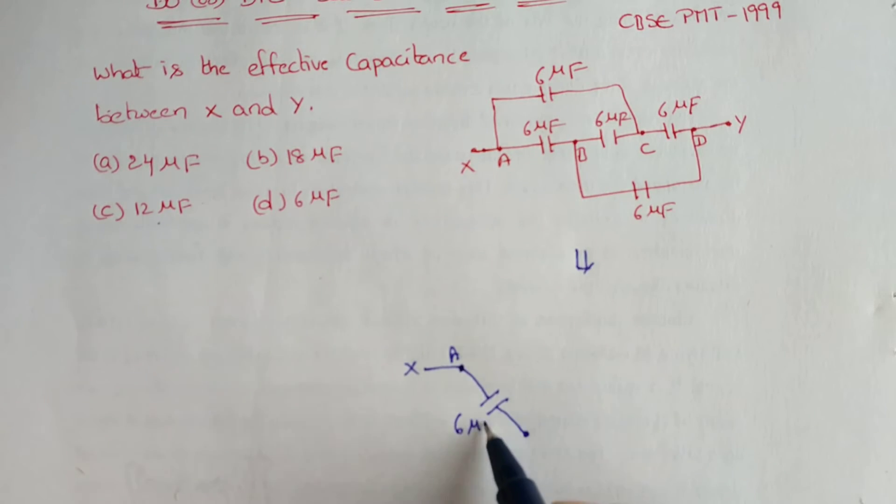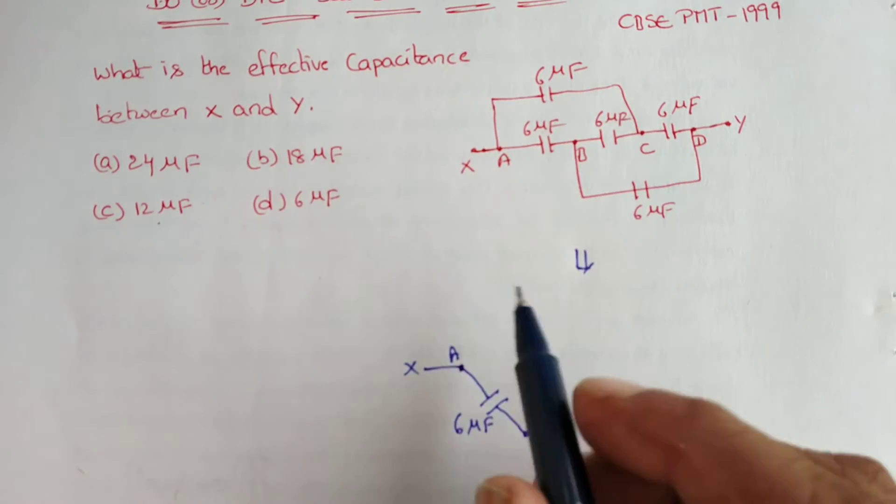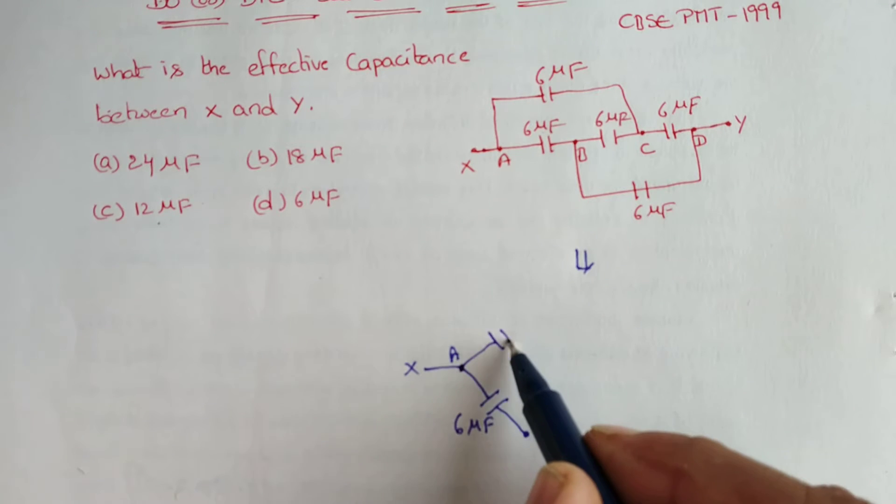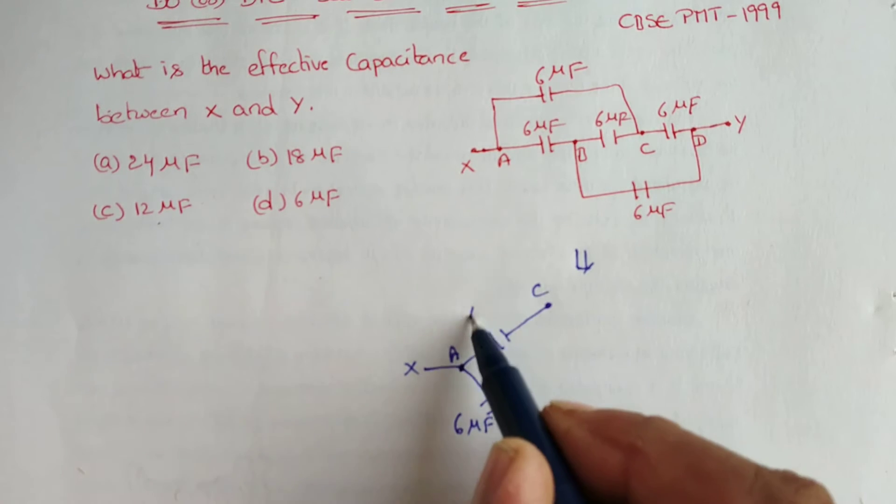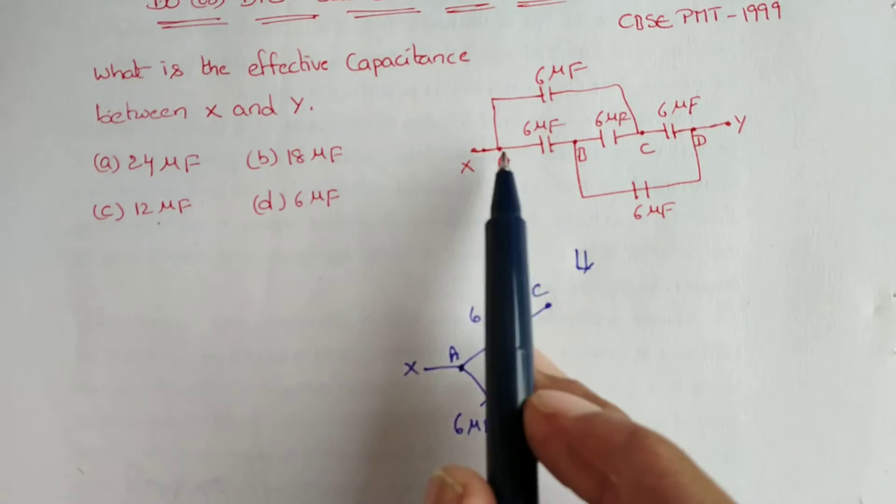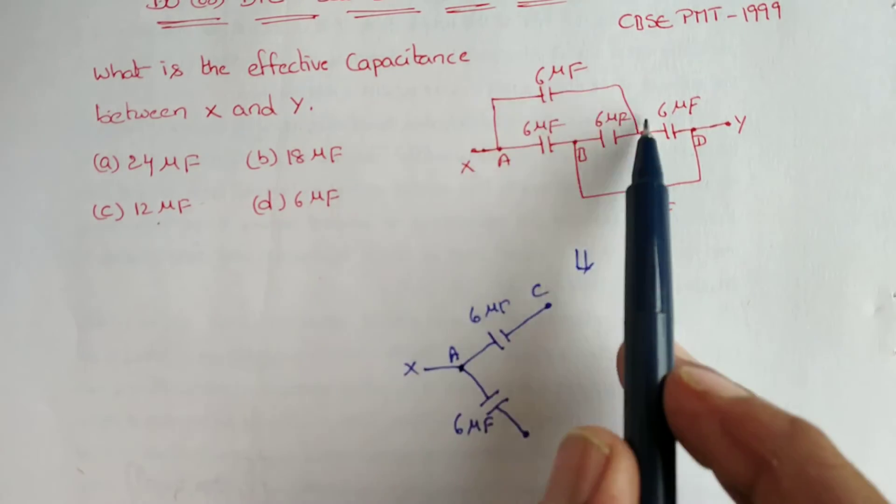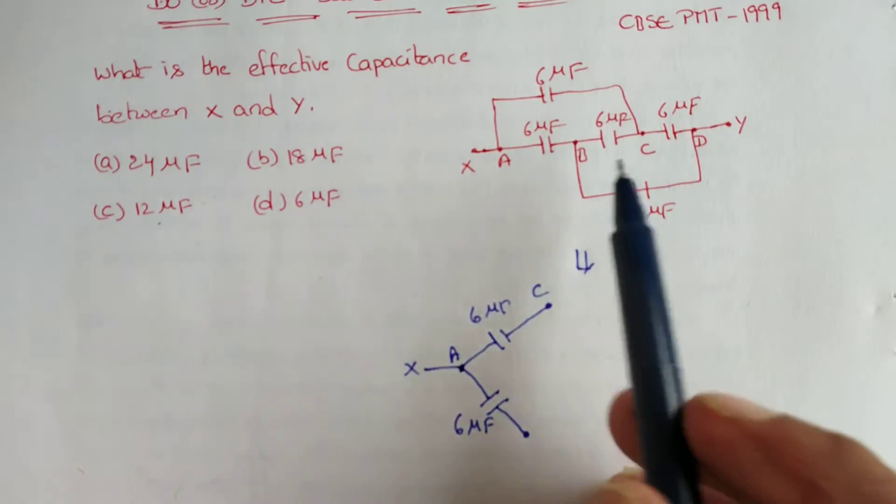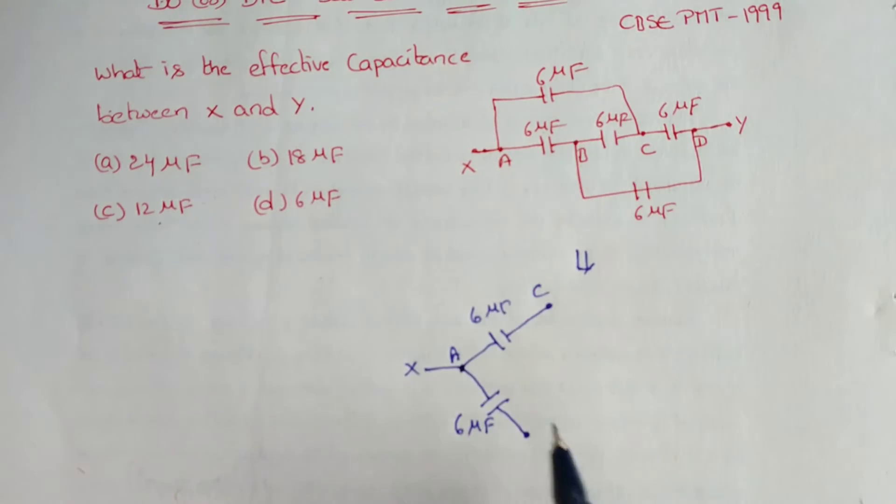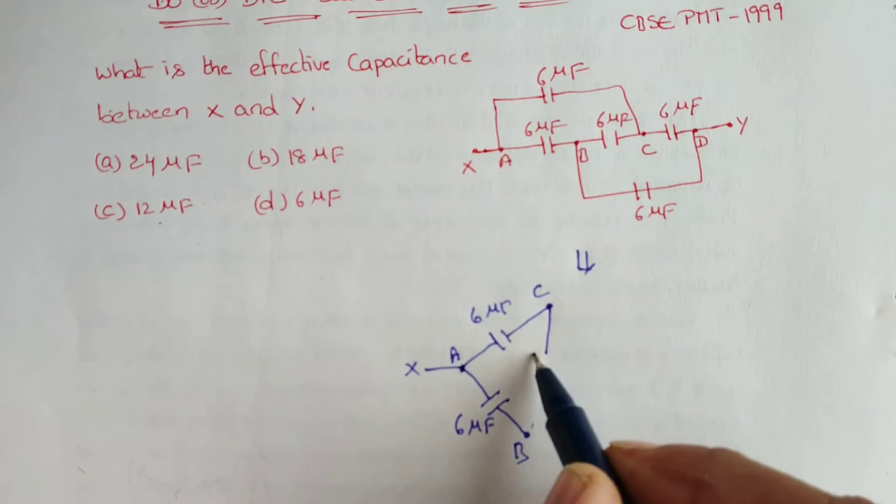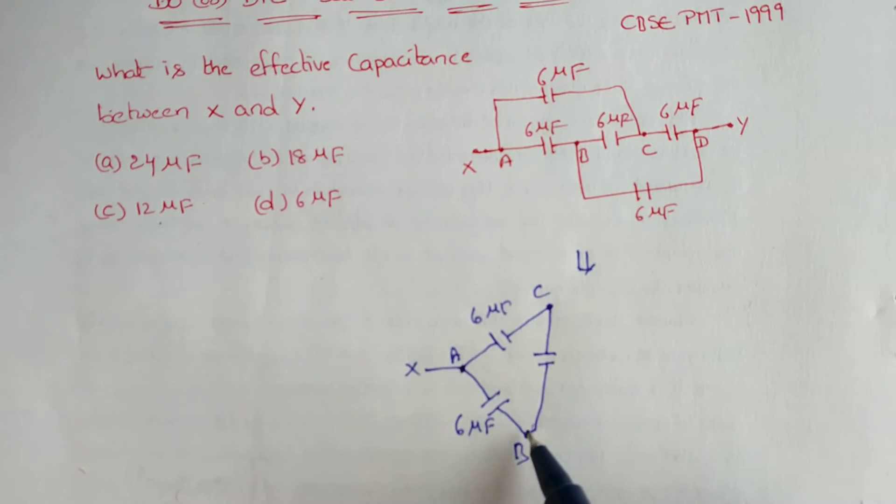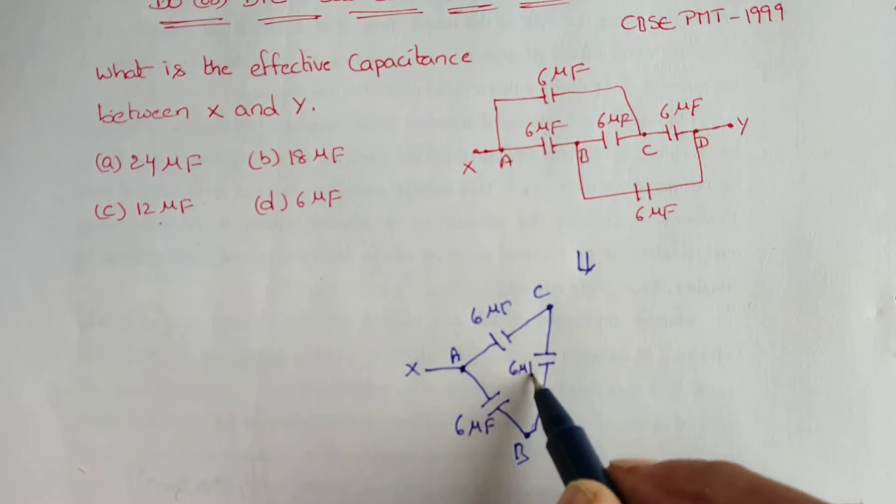This is 6 microfarad from A to B. A to C is another point. This is A to C, also 6 microfarad. A to B completed, A to C also completed. And B to C, one capacitor is present. B to C, another 6 microfarad.